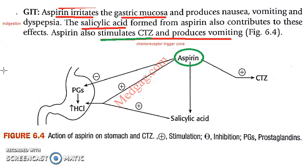In the GIT, COX-1 was maintaining homeostasis. Now that COX-1 is inhibited, the gastric mucosa will get irritated. This will produce nausea, vomiting, and dyspepsia — that is, indigestion.